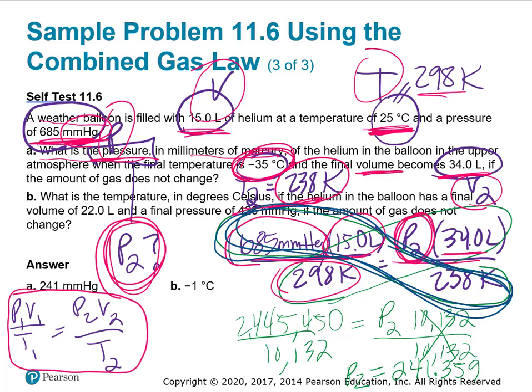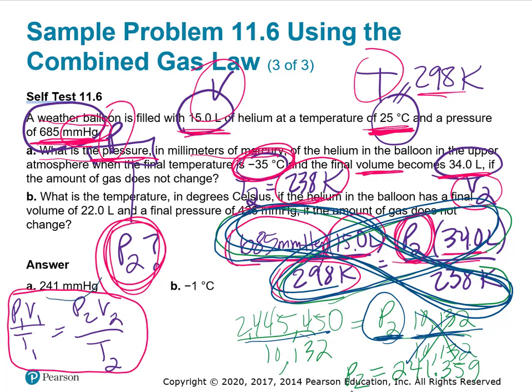I cross-multiplied again, so I did 685 times 15 times 238, all of my diagonals, and got 2,445,450 equals, and then I cross-multiplied here, P2 is the only variable there, and I did 34 times 298 to get 10,132. We need P2 by itself, so divide both sides by 10,132, and got a P2 of 241.359, which rounds to 3 sig figs, 241 millimeters of mercury.